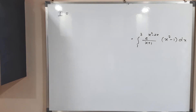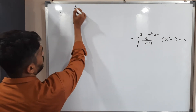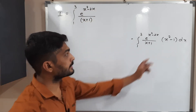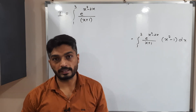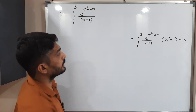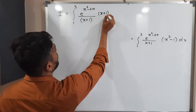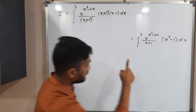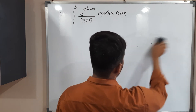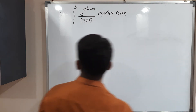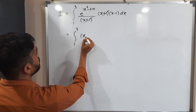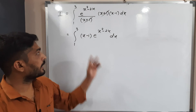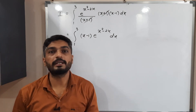Let us solve further. We have the integral from one to three of e raised to (x squared minus 2x) divided by (x plus one), times (x squared minus 1) dx. Using the difference of squares formula, x squared minus one equals (x plus 1)(x minus 1). So (x plus 1) in the numerator and denominator cancel, leaving the integral from one to three of (x minus 1) times e raised to (x squared minus 2x) dx.